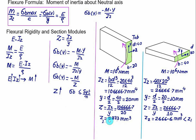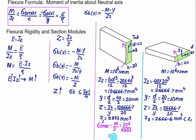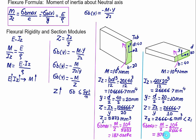Naturally, with a higher value of Z in the first case, the bending stress will be lower — which is what we want to prove. The maximum bending stress in the first case equals M divided by Z, which is 10 to the power 6 divided by 5333.3, coming out to be 187.5 MPa. In the second case, maximum bending stress equals 10 to the power 6 divided by 2666.6, coming out to be 375 MPa — much higher than the previous value.